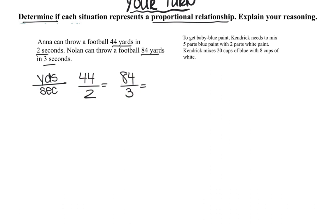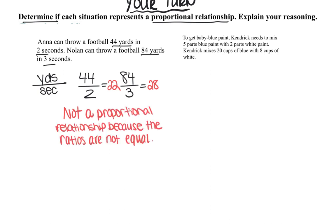When I divide those out, I see that 44 divided by two is 22. And if I do 84 divided by three, I get an answer of 28. Since those two numbers are not equal, this is not a proportional relationship because the ratios are not equal. Give yourself a star if you got that one right.